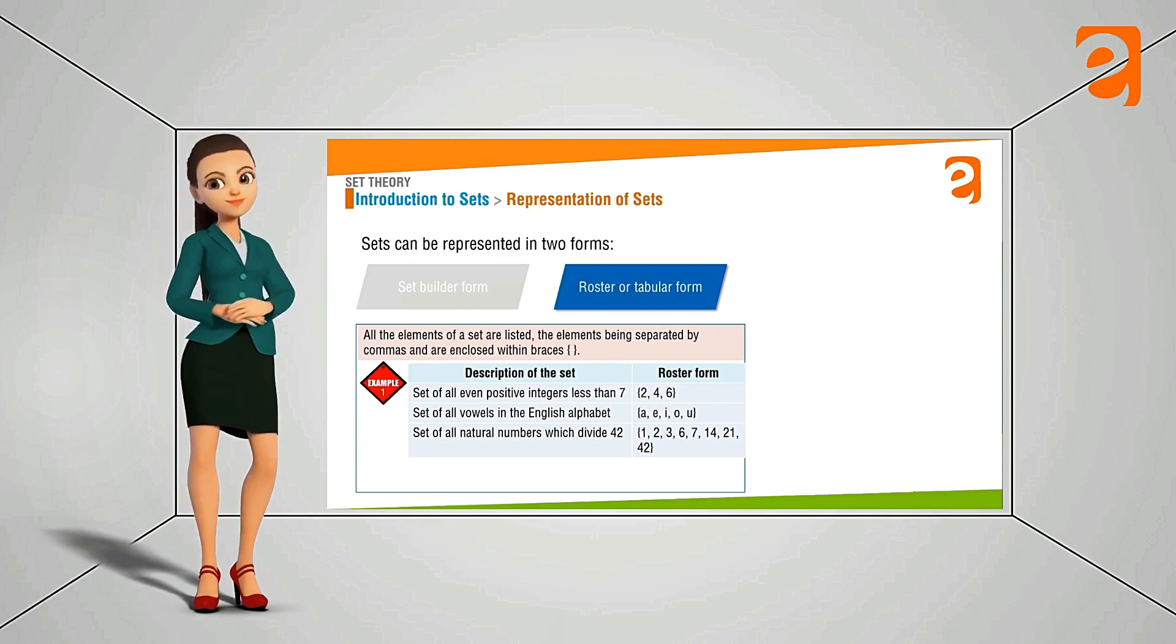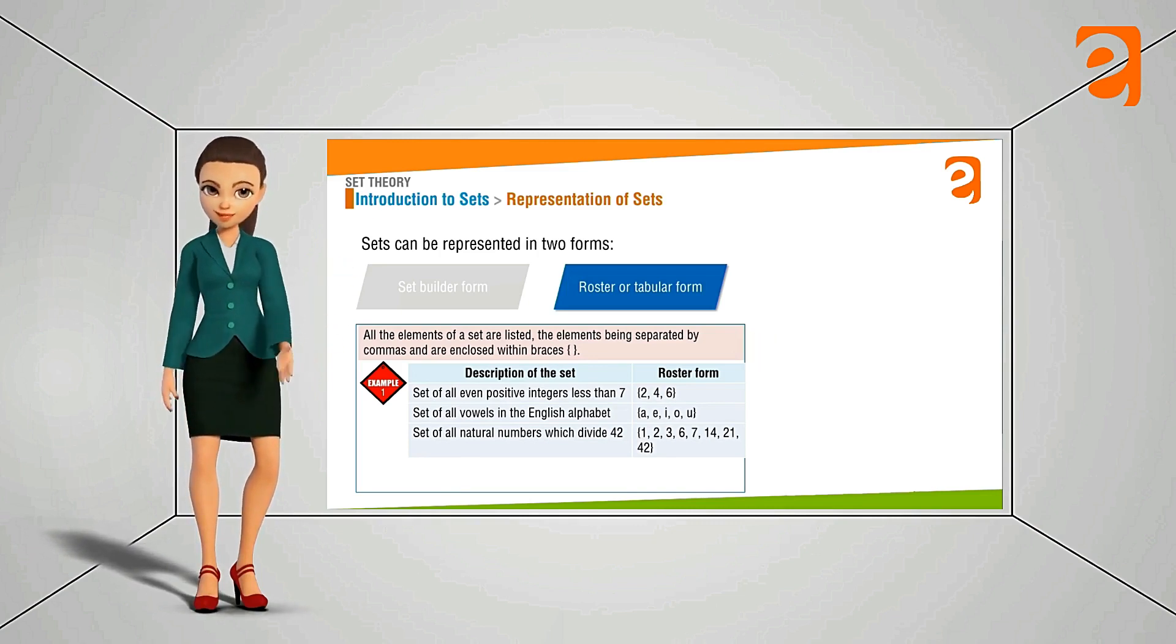Similarly set of all vowels in the English alphabet it is A, E, I, O, U. Keep it in the curly bracket separated by the comma. This is the roster form.